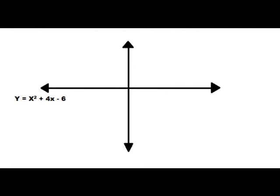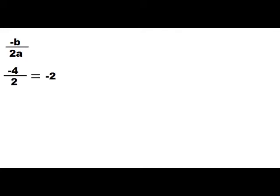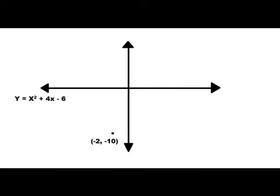Next problem — second verse, same as the first. We're gonna use the same processes. This time we've got x squared plus four x minus six. This is a little bit more complex, so we're gonna find the vertex to help us graph this thing out. The x-coordinate of the vertex: we use negative b over two a. We get negative two. We plug that in for x: negative two squared plus four times negative two minus six, which comes out to negative ten. So our vertex is at (-2, -10). Stick that on there and keep that in mind.